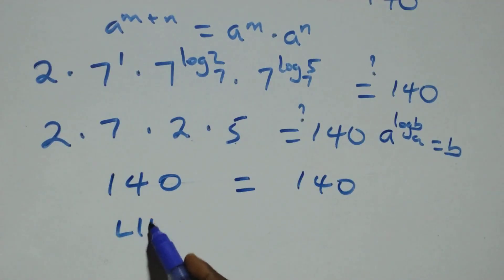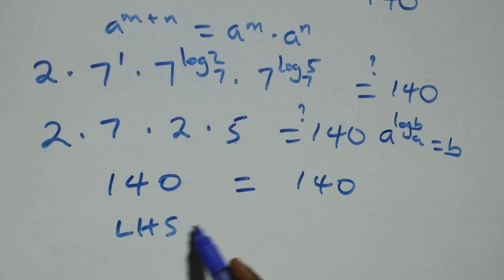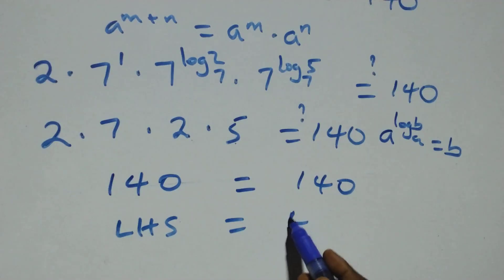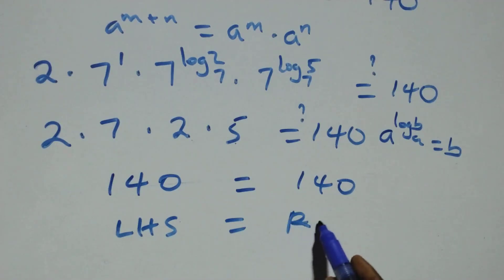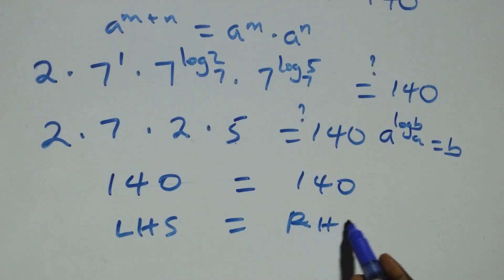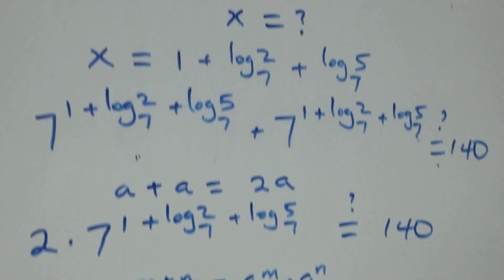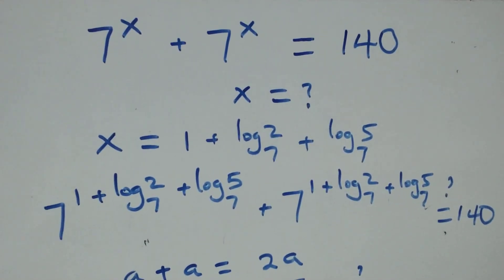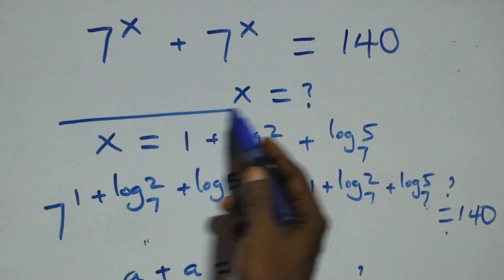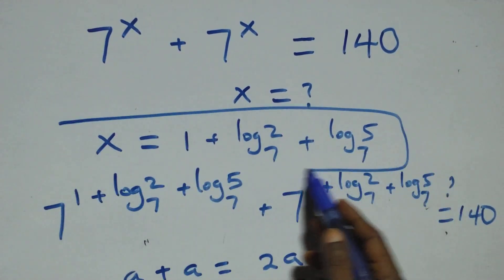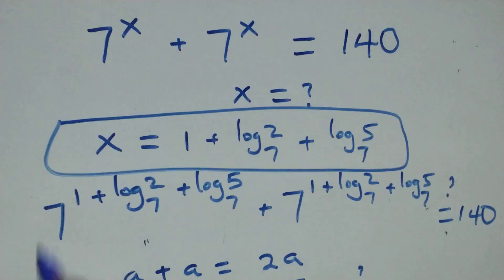The left hand side is equal to the right hand side. Therefore we conclude that x equals 1 plus log base 7 of 2 plus log base 7 of 5 satisfies this given problem.